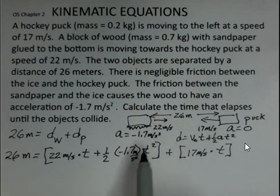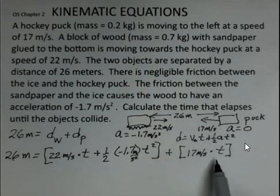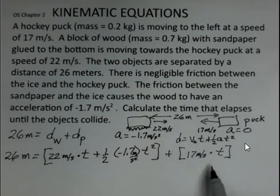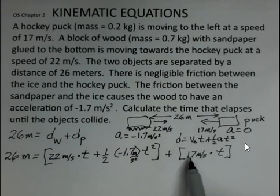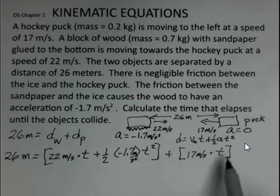So this is a little unconventional, I hope not too confusing. I hope you can get the concept here. Here's the distance the wood travels, that's going to be to the right. Here's the distance that the hockey puck travels, it's to the left, but it comes in in this formula the way I've set this up as a positive number. So plus 17 meters per second multiplied by time.